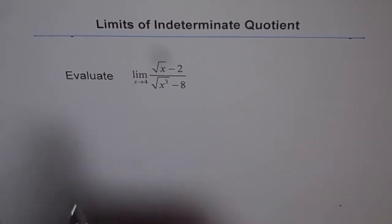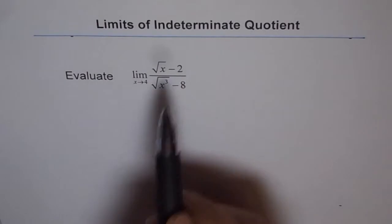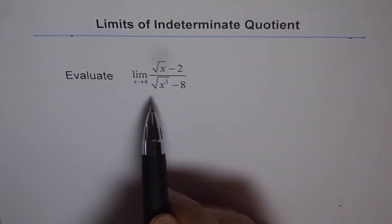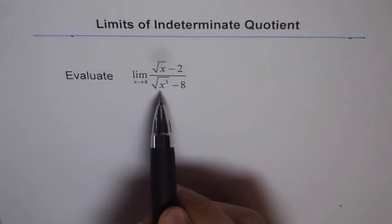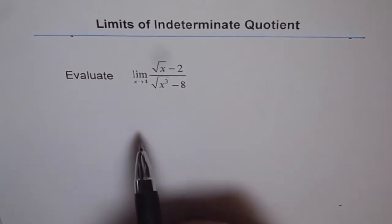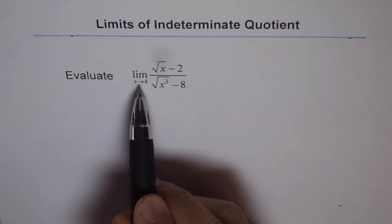Evaluate the limit of the function square root of x minus 2 divided by square root of x cubed minus 8, where x approaches 4.